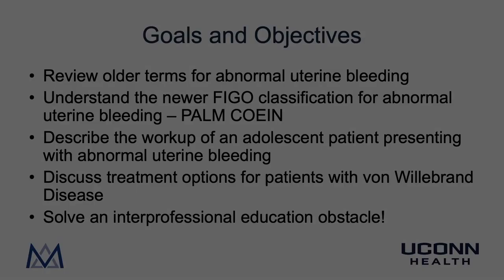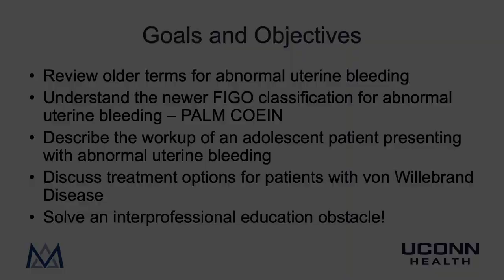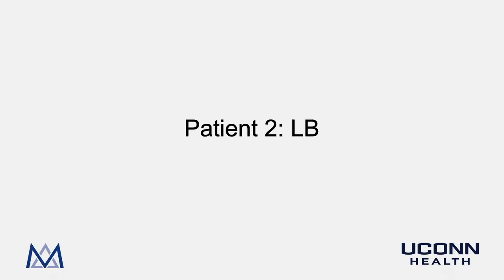The goals and objectives of this video are as follows: review older terms for abnormal uterine bleeding; understand the newer FIGO classification for abnormal uterine bleeding, PALM-COIN; describe the workup of an adolescent patient presenting with abnormal uterine bleeding; discuss treatment options for patients with von Willebrand disease; and solve an interprofessional education obstacle.